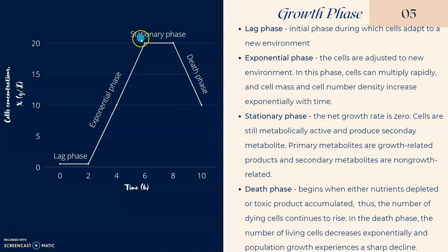Then the cell will enter the stationary phase where all the nutrients are depleted. The cell concentration remains constant in this phase. Following the stationary phase is death phase. During the death phase, the number of dying cells continue to rise.